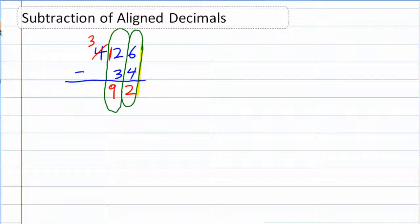And then I just keep moving to the left. 3, there's nothing down there. If it's helpful, I could put a 0 down there because nothing's there. 3 minus 0 though is still 3. So we have our solution 392.